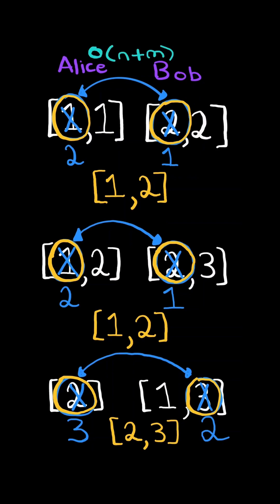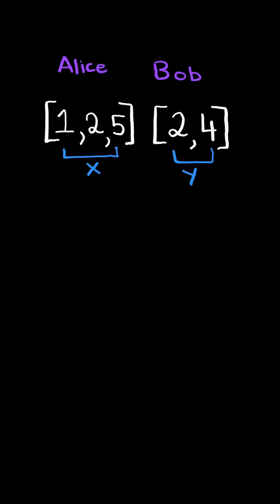We will solve this in O of the length of Alice and Bob's list. Consider this example. We need to find an X in Alice's list and a Y in Bob's list to swap. In other words, if we take the sum of Alice's array and subtract X and add Y, it must equal the sum of Bob's list, subtracting Y and adding X.